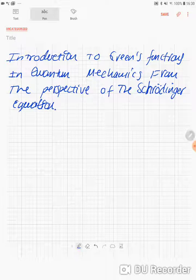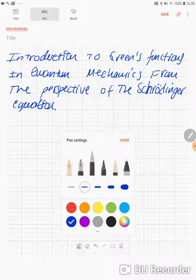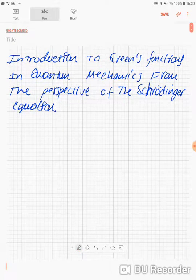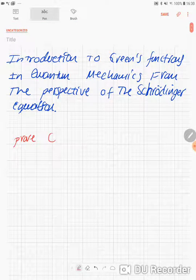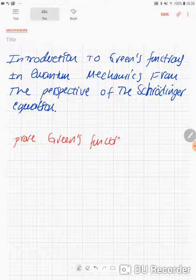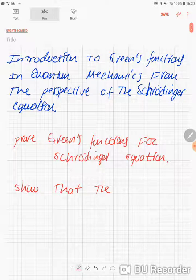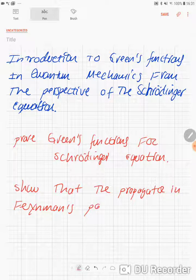I've been thinking about how to get started with Green's functions in quantum mechanics on the channel, and I came to the idea that perhaps it will be a good approach to prove Green's functions for the Schrödinger equation, then show that the propagator in Feynman's path integral